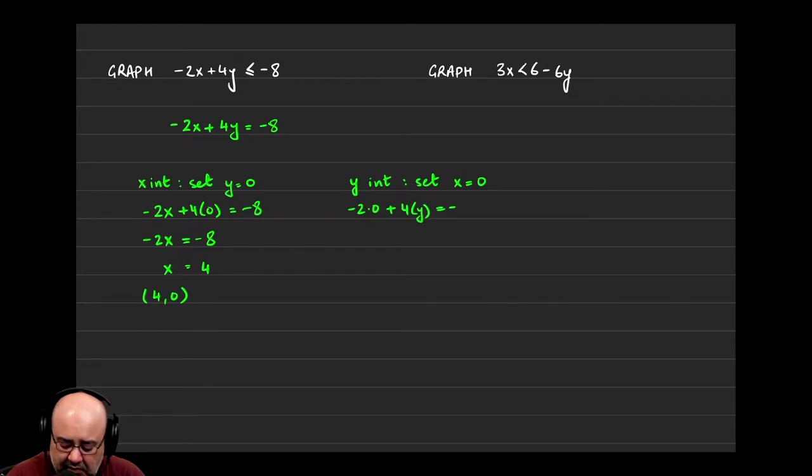So -2(0) + 4y = -8. -2 times 0 is gone, it's just 0, so we get 4y = -8. Dividing both sides by 4 gives us -2. So my y-intercept is (0, -2)—that's what we plugged in for x, comma -2.